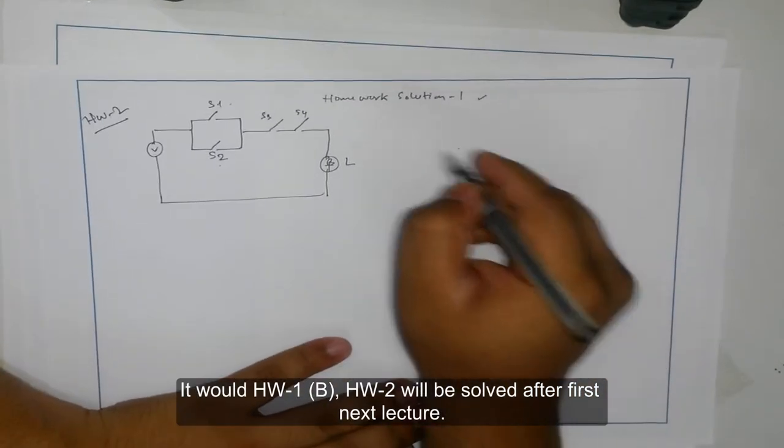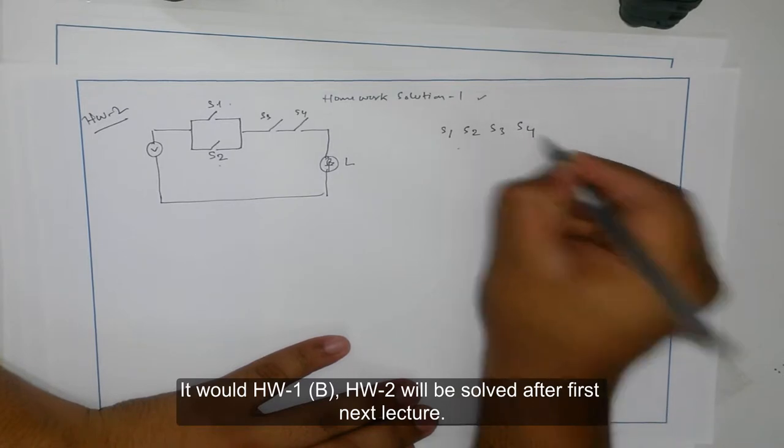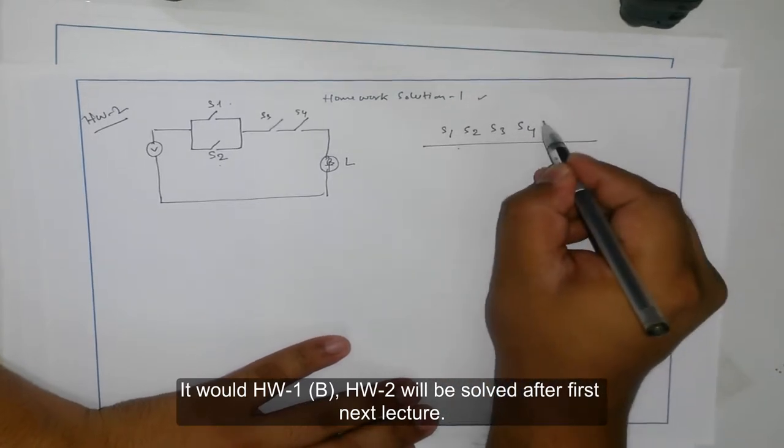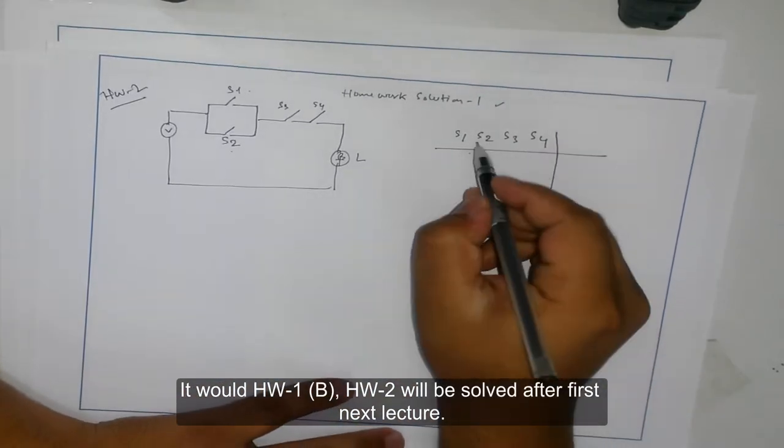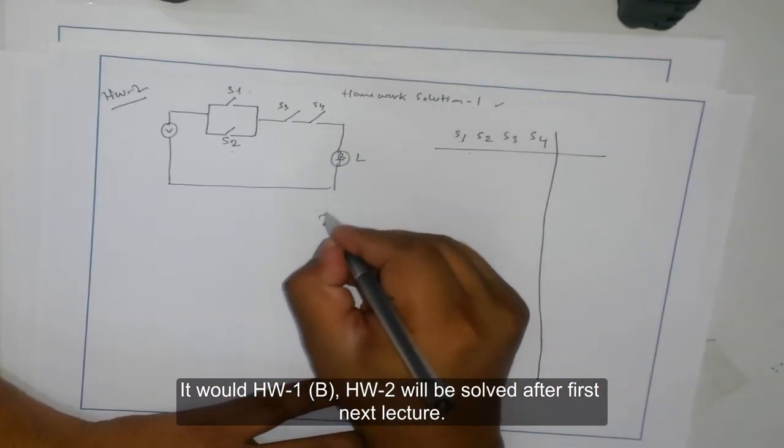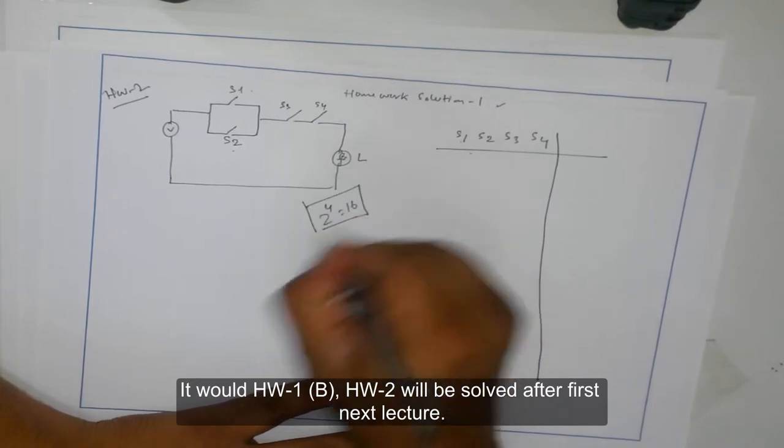So if either one of this true and both of those are true, then the light will be on. That's the idea. So let me write this down: S1, S2, S3, S4. As you know from the previous concepts, since there are four variables, it should be 2 to the power 4, 16 combinations.